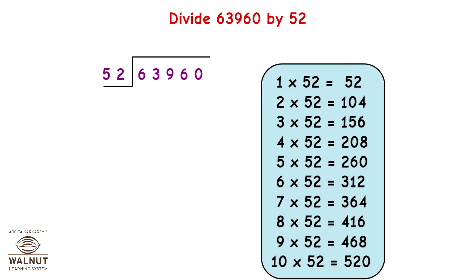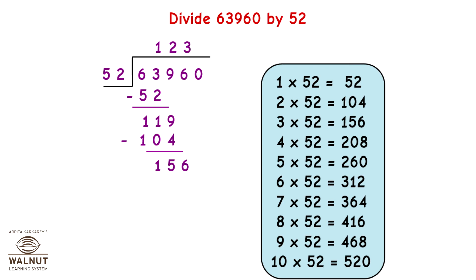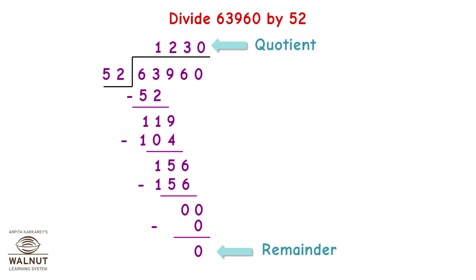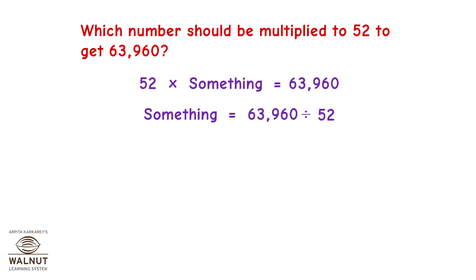We write the table of 52, then we start dividing. The quotient is the number that we have to multiply by. The remainder is zero, so we know our answer is correct. Let us bring our answers here — we write the quotient in place of the unknown. That is the number which should be multiplied.